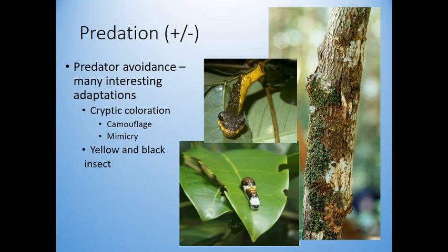One of the reasons predator avoidance mechanisms are so interesting is because there is such strong natural selection. There is such a benefit in not dying — it's the ultimate negative — so of course that selection would be extremely strong, driving different species to evolve different strategies to not get eaten.